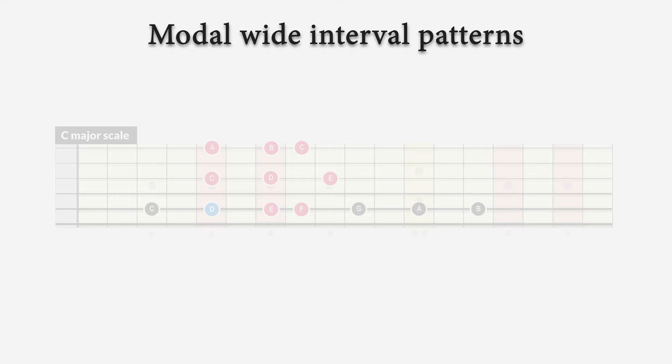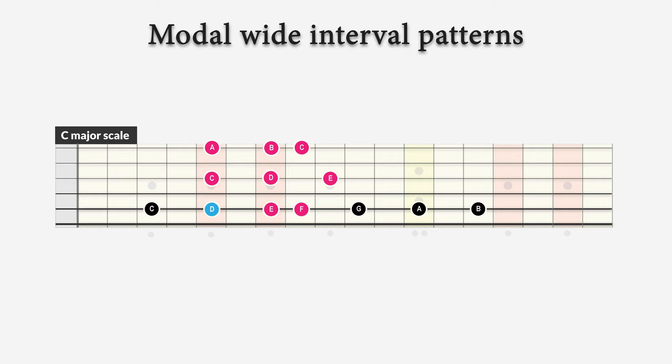Now if we play the second pattern of the C major scale, then we have to start on the note D. Now instead of playing this over the tonic C major 7, we are now going to play this over the D minor 7 chord. Now with that, we get a D-Dorian wide interval scale pattern with the notes D, E, F on the fifth string, C, D and E on the third string, and A, B and C on the first string. And this sounds like this.